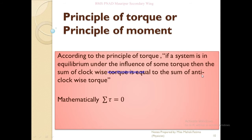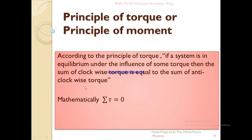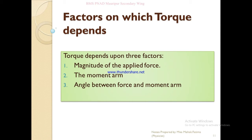If we sum clockwise and anticlockwise torques, the result is zero. Along anticlockwise and clockwise directions, if we sum both, your total torque will be zero, because the clockwise forces and anticlockwise forces cancel each other out. So the sum of clockwise and anticlockwise torques is zero.